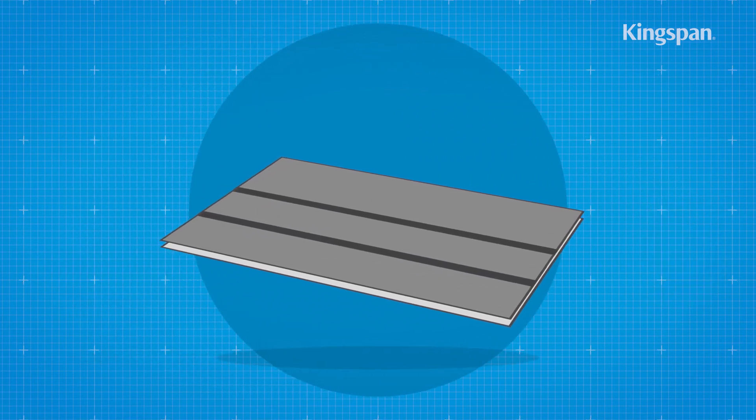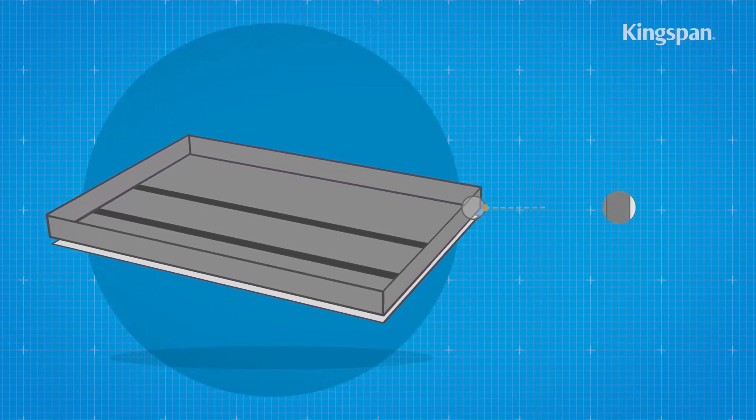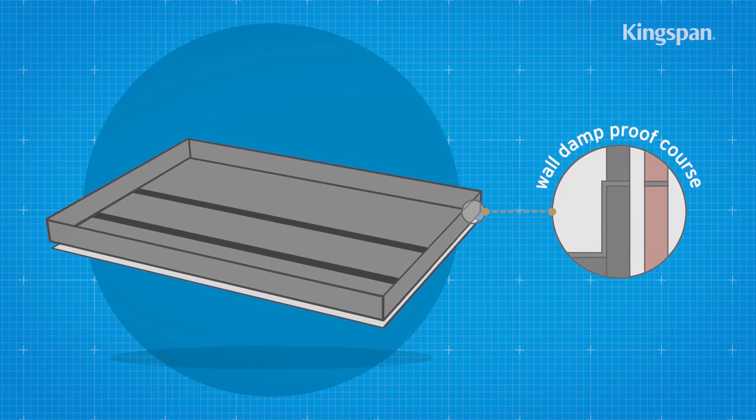The membrane should be brought up to the surrounding foundation walls until it's sufficiently high enough to connect with, or form, the wall damp-proof course.